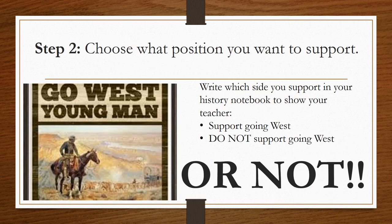Step two is to choose what position you want to support. Our expectation is that you write which side you support in your history notebook to show your teacher. You have two options: support going west, or do not support going west, and you will need to explain why or why not.